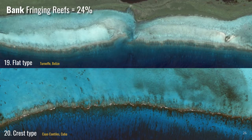Fringing reefs also occur in bank settings — shelves wider than five kilometers or submerged platforms like the Bahama banks. These bank fringing reefs are very common and form 24% of all fringing reefs. The first type are flat type bank fringing reefs, like at Ternephiatal in Belize, where you can see a small island on the reef flat and mangrove advancing into the lagoon — both typical of flat type reefs because of their drastic reduction in wave energy. The second are crest type bank fringing reefs, like near Caocantilles in Cuba, where the back reefs are characterized by strong wave-induced currents that transport sediment downslope into the lagoon.